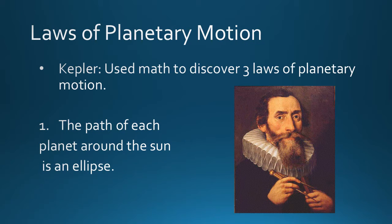We have some laws of planetary motion. Remember the difference between theories and laws: laws can be proven, theories are widely accepted. Kepler used math to discover three laws of planetary motion. Math is the language of science — it's what's usually used to prove different things in science. I'm going to go over his three laws and I have diagrams for each of them.